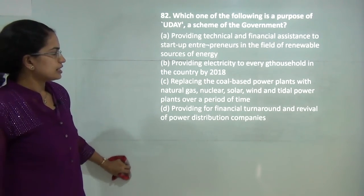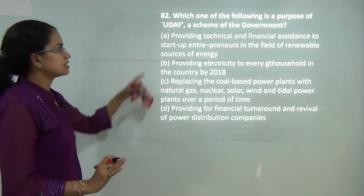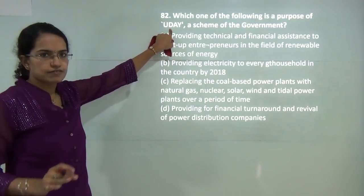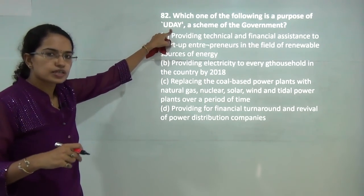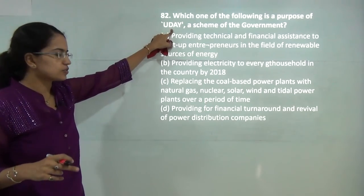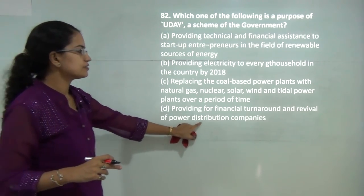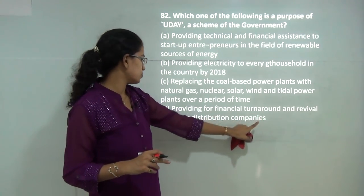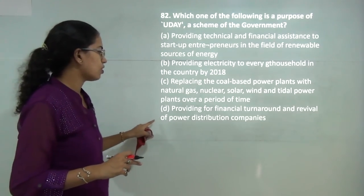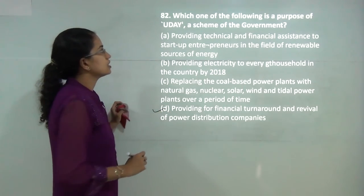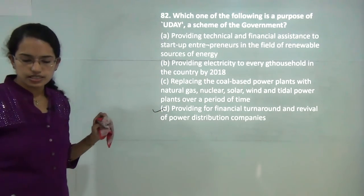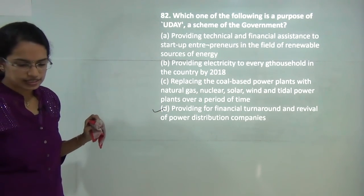The UDAY scheme is the DISCOM scheme that provides for financial turnaround and revival of power distribution companies. So D is the correct answer here.